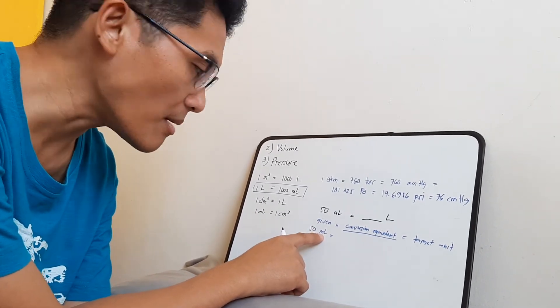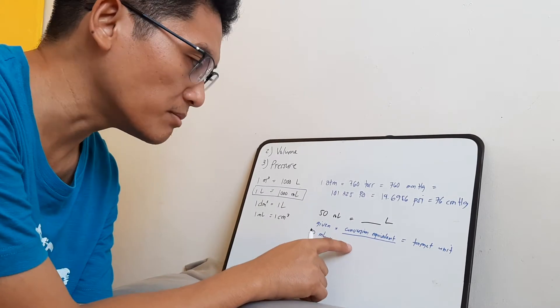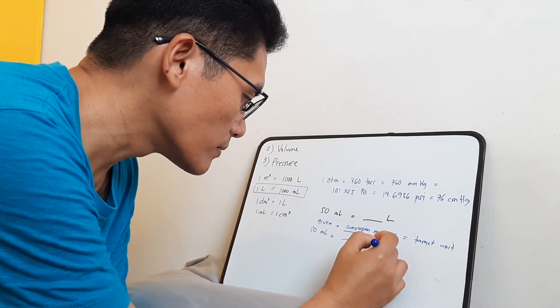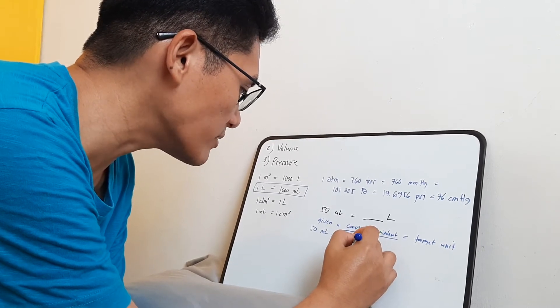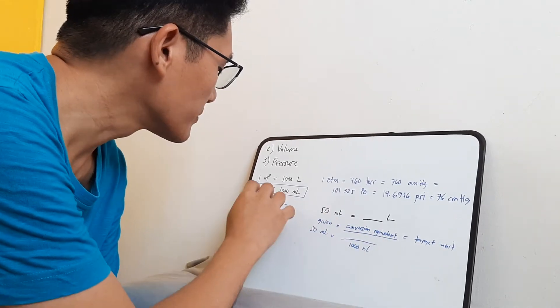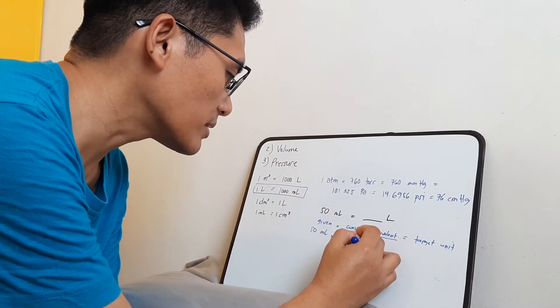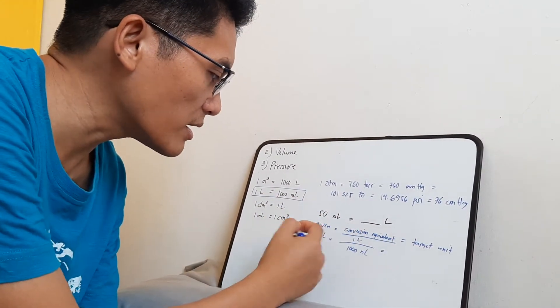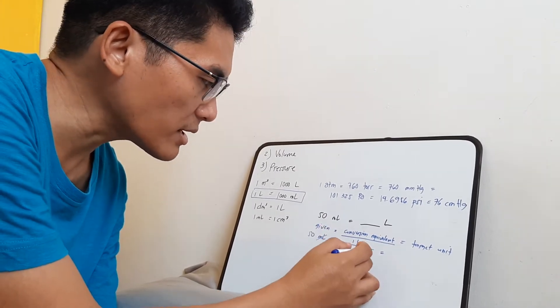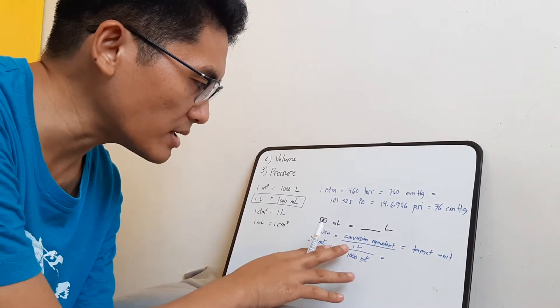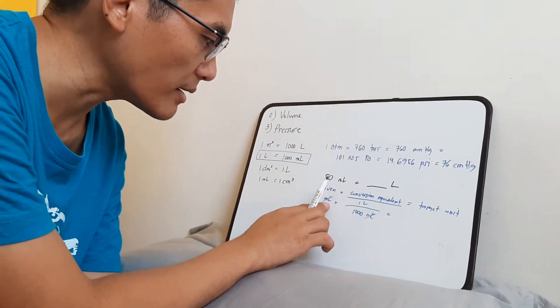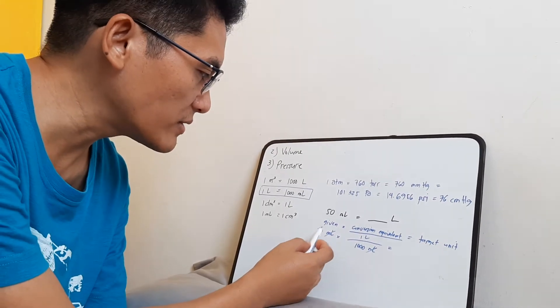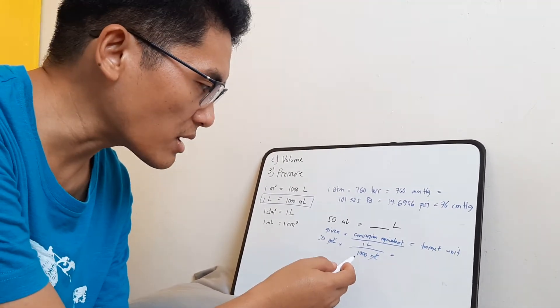And then you just have to rearrange these values and these units such that they cancel out with your given. Now since ml here is at the top, you want that ml to be at the bottom in your fraction so that they cancel out. So you write here 1,000 ml, and then the 1 liter you write at the top. Because when you now proceed with the operation, these ml cancel out. These ml's, unit of ml's at the top and at the bottom, they cancel out, leaving you with liters.